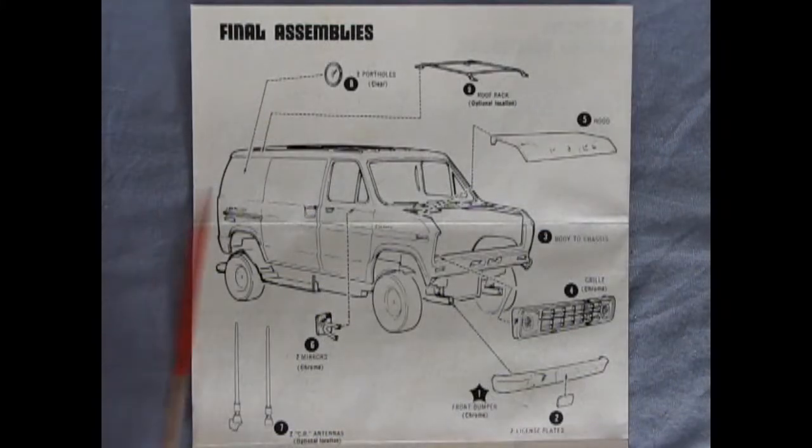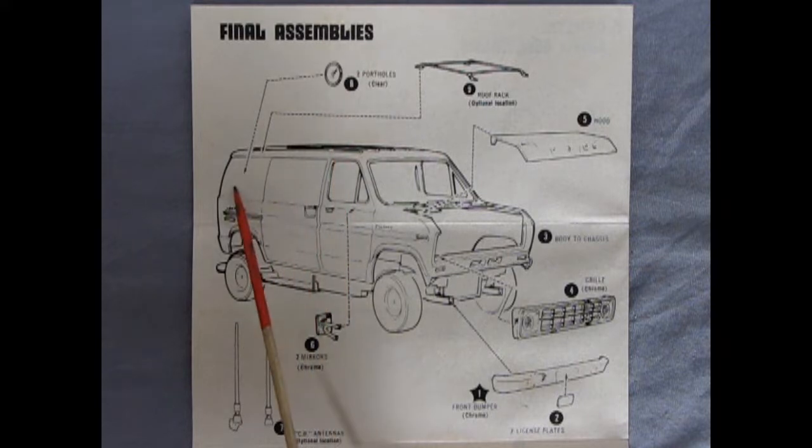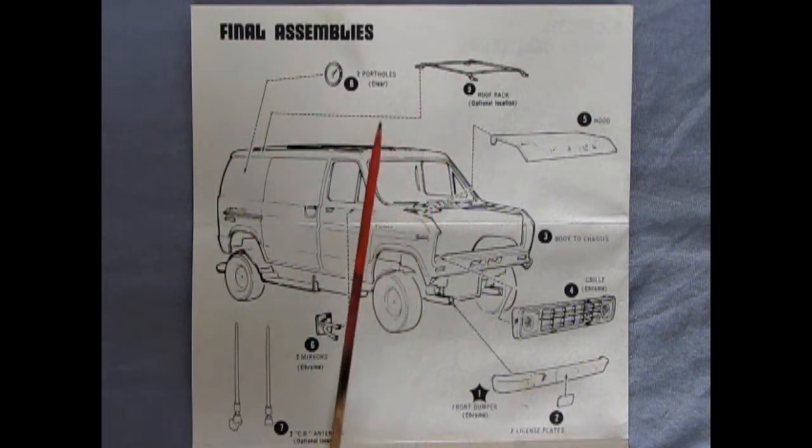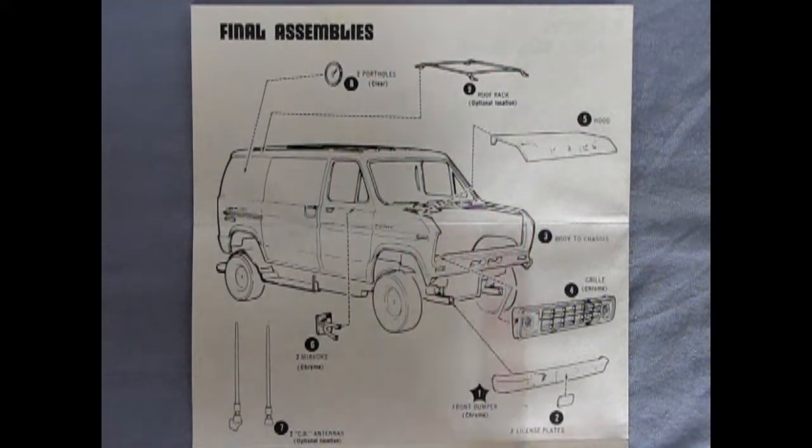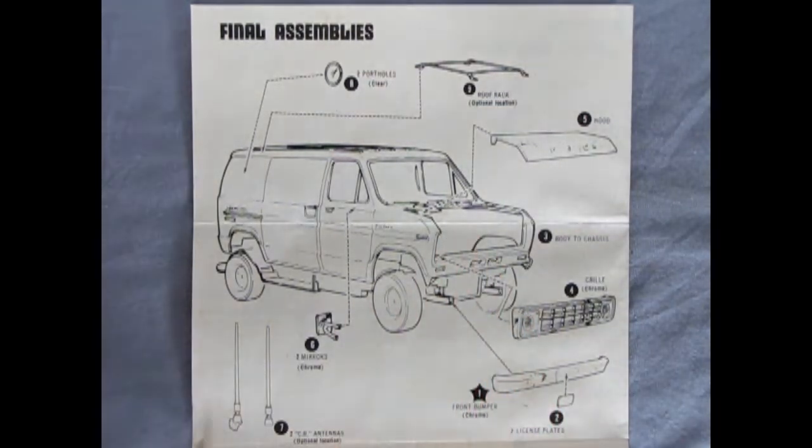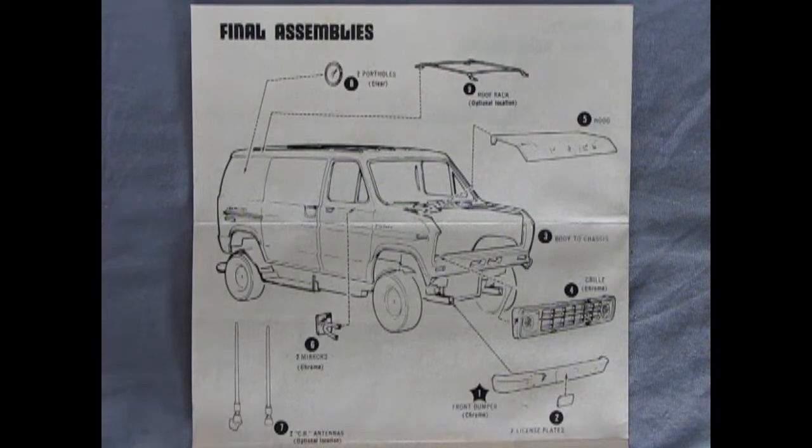We wrap up our van in the final assemblies here where of course we have our two portholes which glue onto the side, or you could actually drill a hole so that you can see inside this van. Here we have our roof rack which is an optional item being dropped on the top, as well as our hood going in place, the front grille, front bumper and license plates, and then our two side mirrors and your choice of CB antennas. The location is optional.